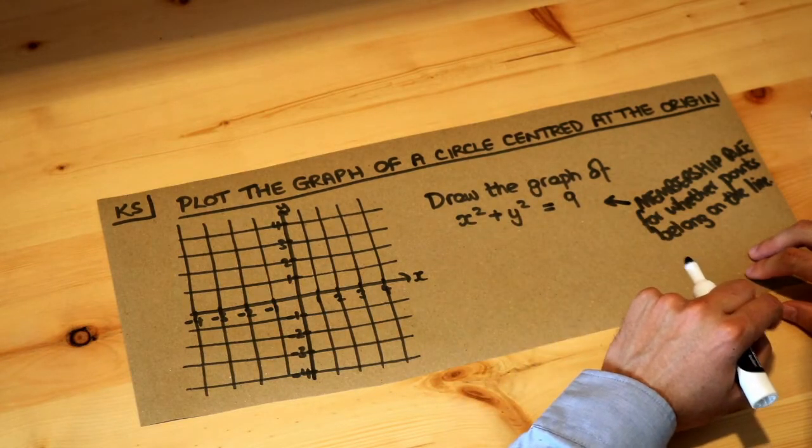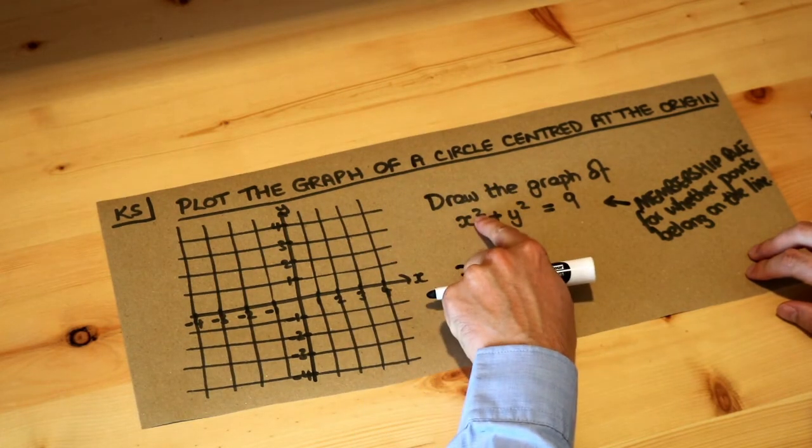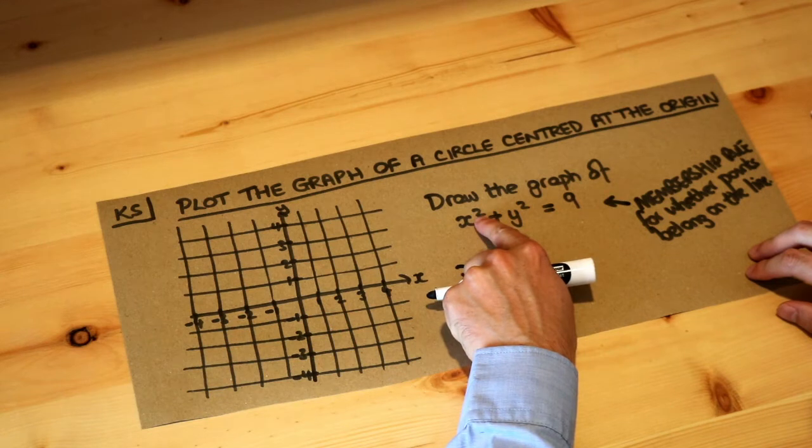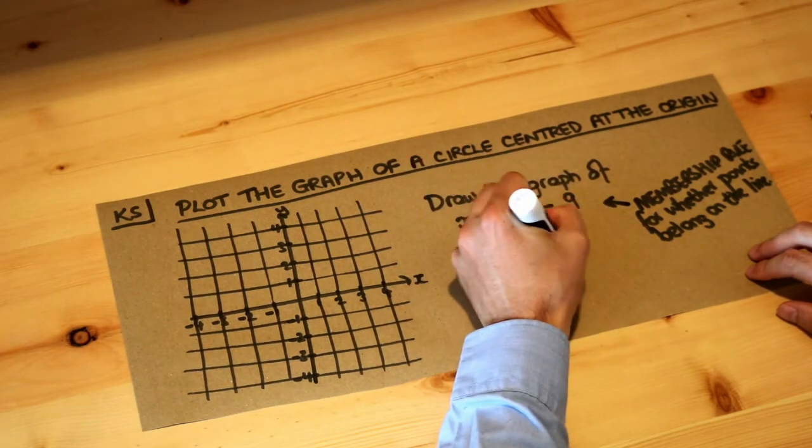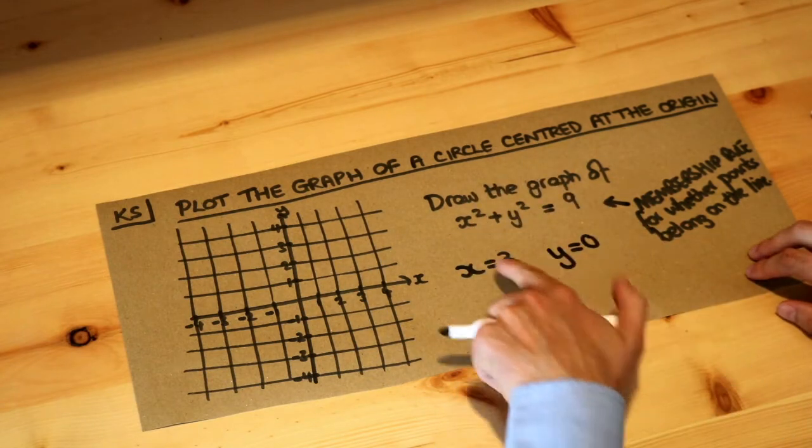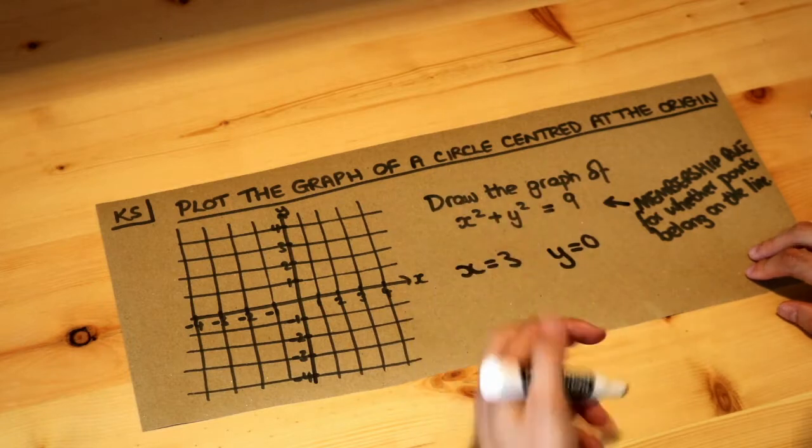Well, if I make x equal to 3, for example, if x was 3, then 3 squared would be 9, and 9 plus what would be equal to 9? Well, y would have to be 0, wouldn't it? So that would work, because if x is 3, you have 3 squared plus 0 squared, that is indeed 9.